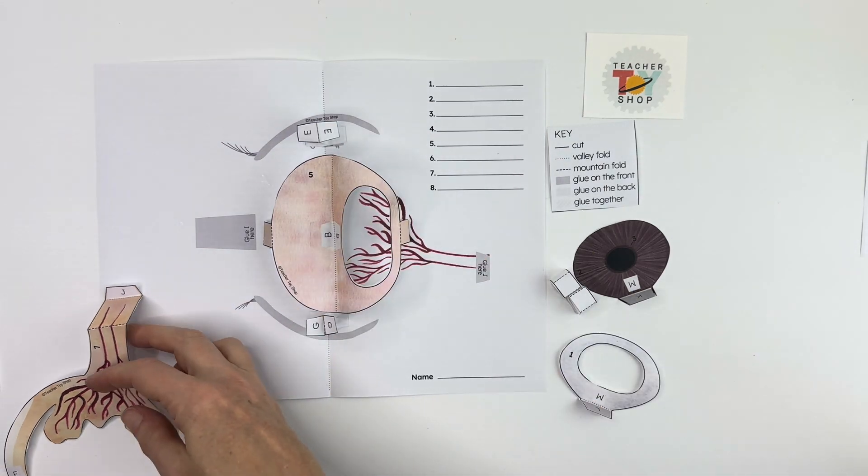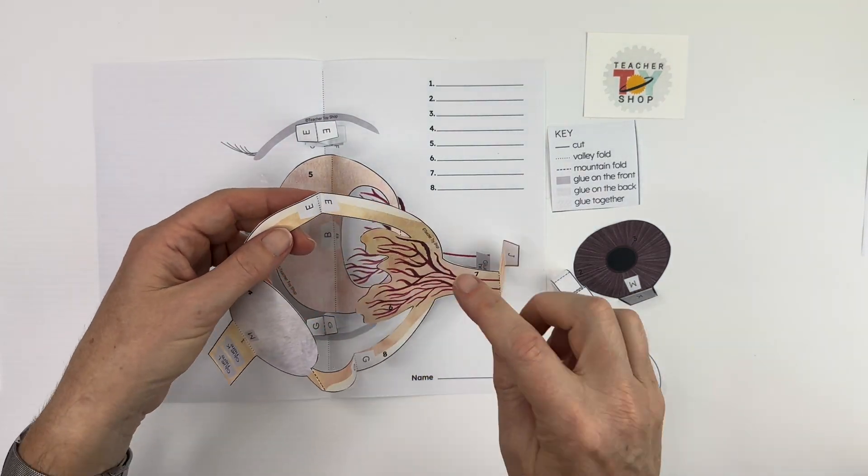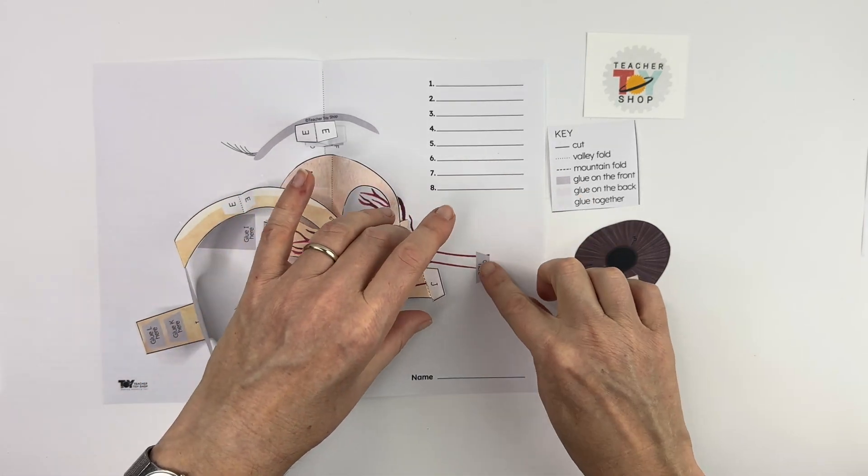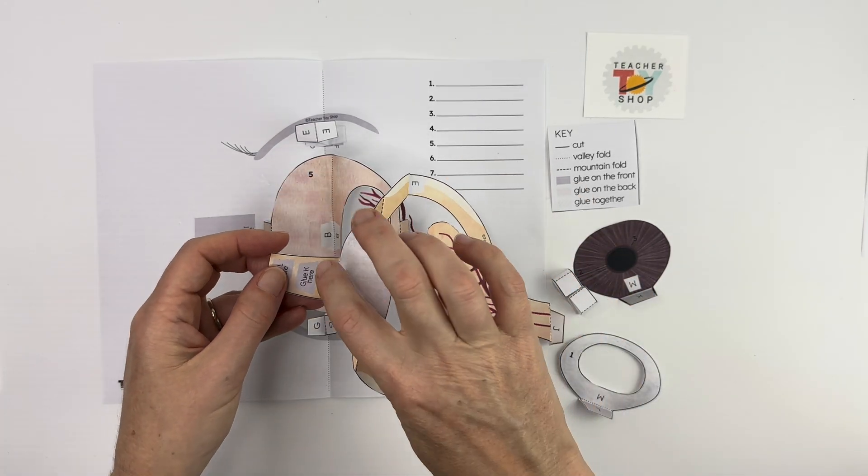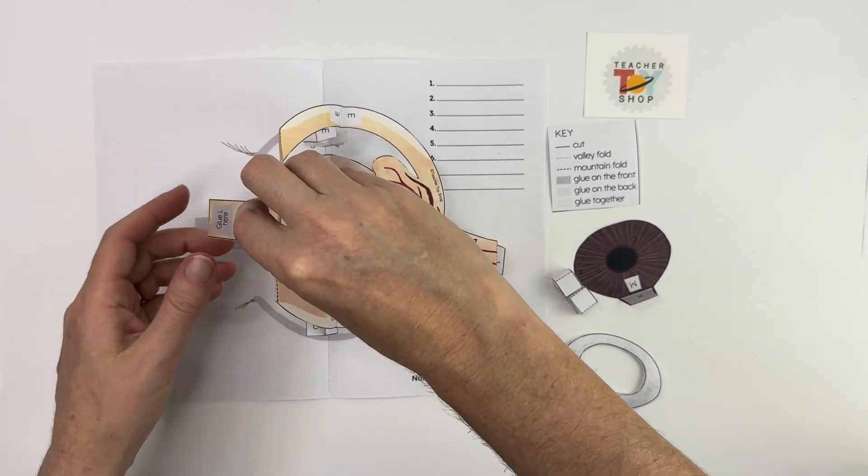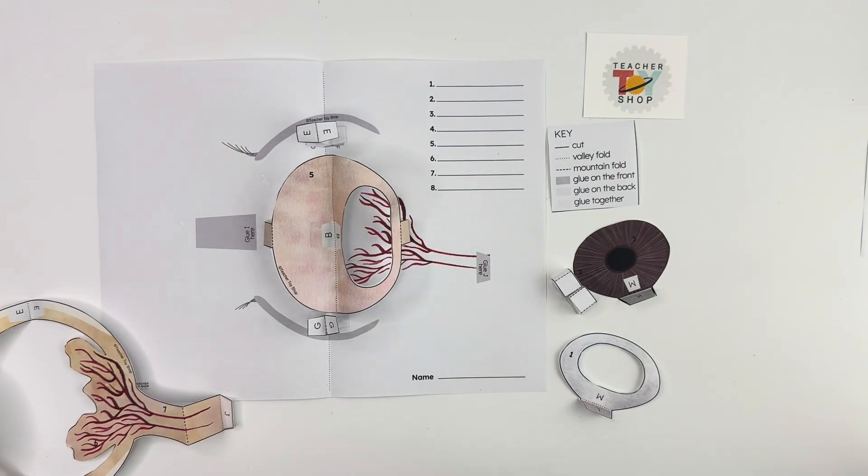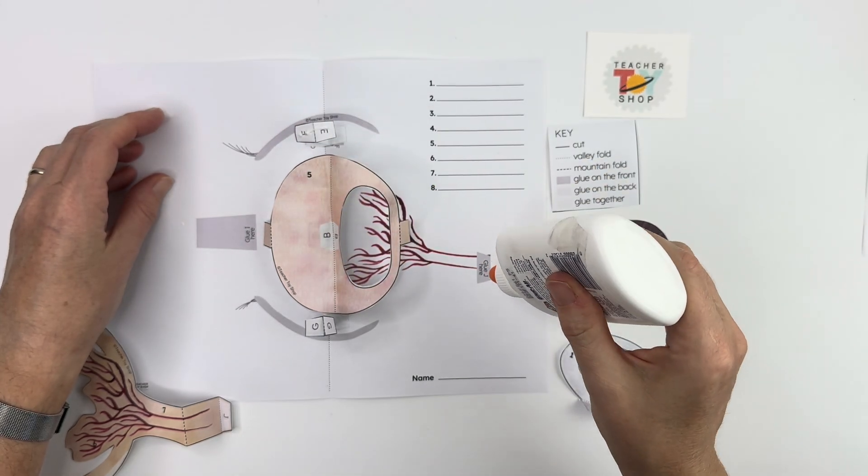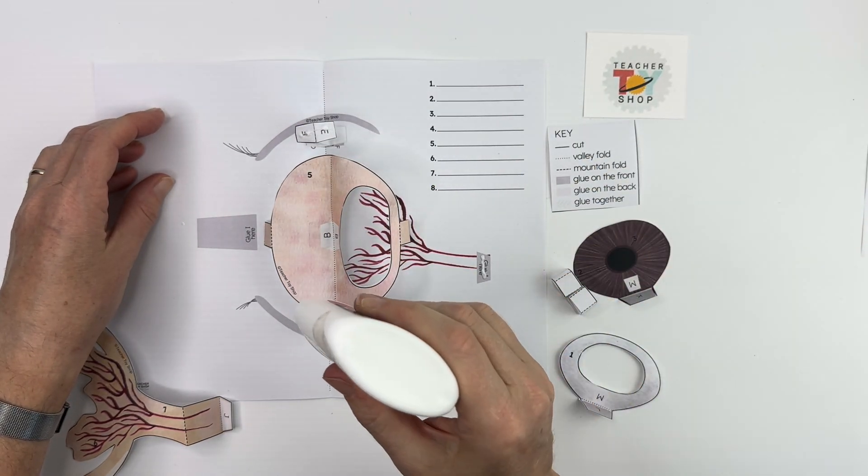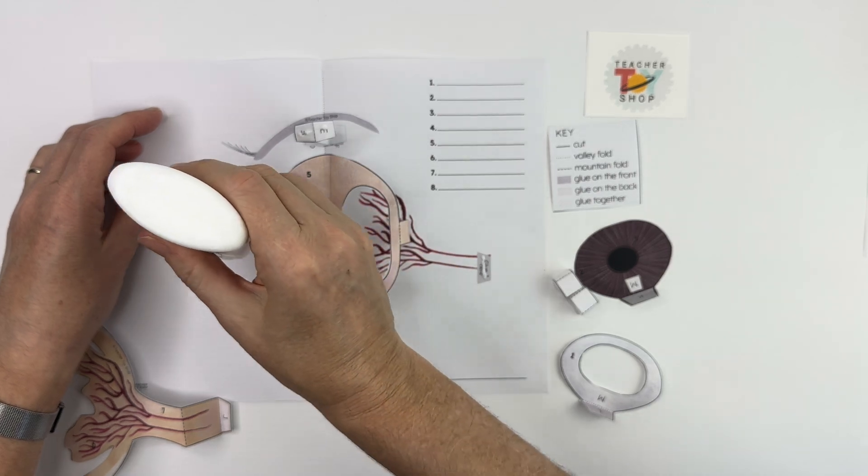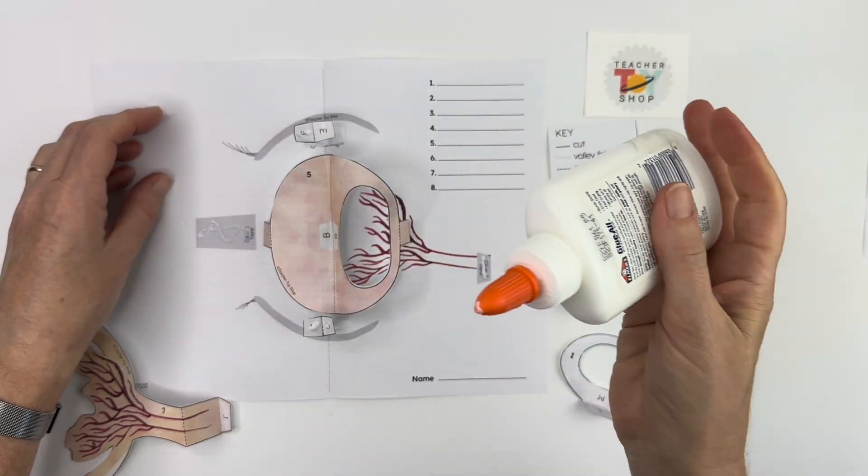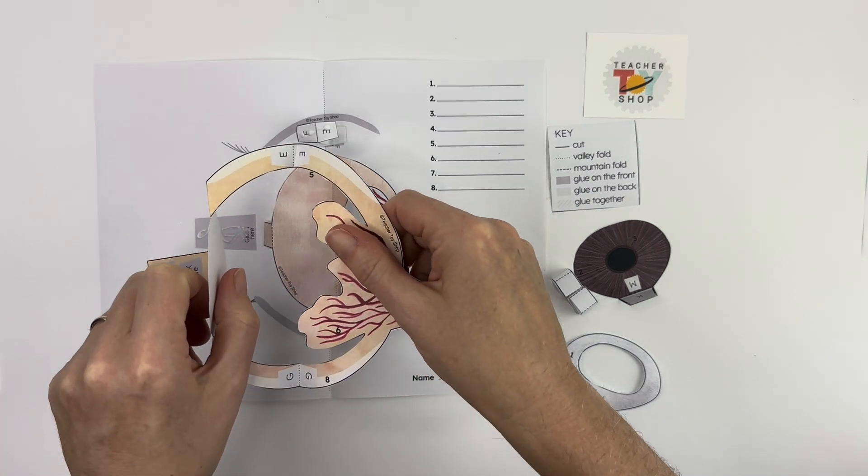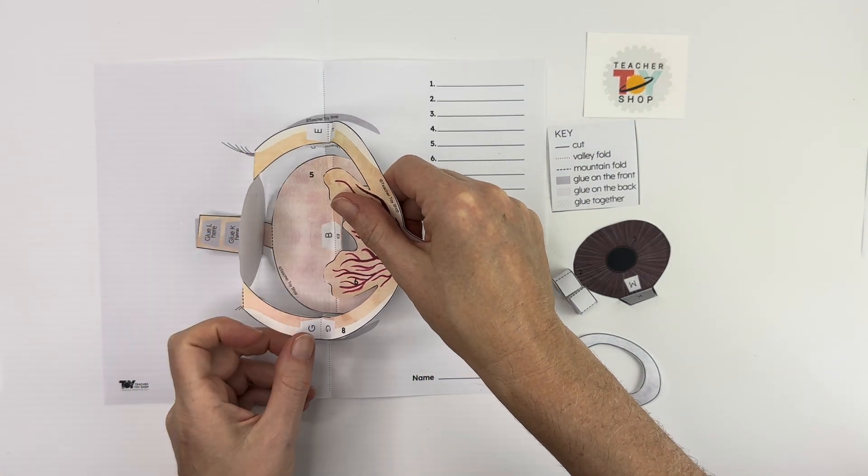And then the way this is going to work is this big piece is going to sit on top so you can see that E is going to go to E, G is going to go there, this J will glue here and then this big I piece is going to glue down right there. So I'm going to go ahead and put glue on all of those pieces. You can see this actually comes together really quickly. And glue here and here. All right so the G on top.